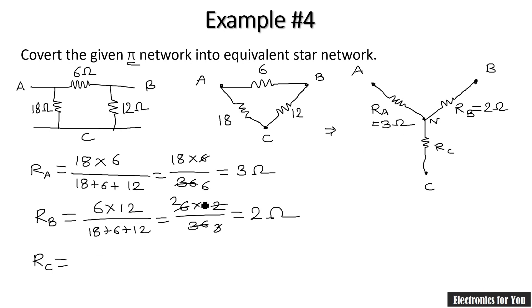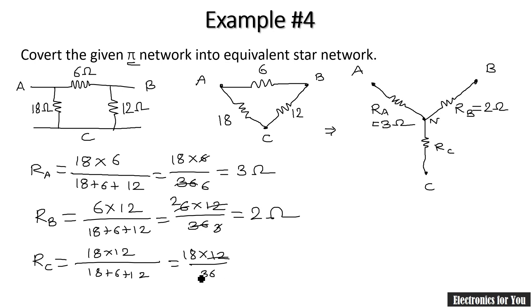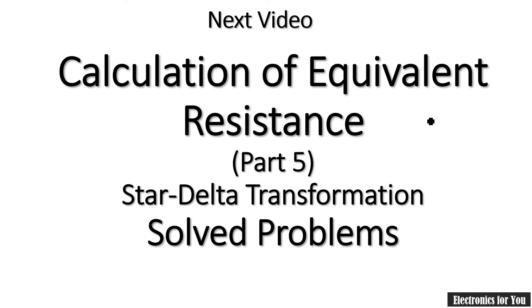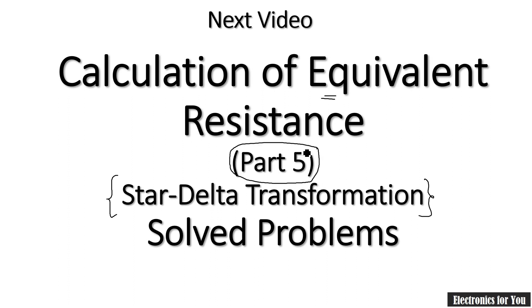Now let us calculate R_C, the third resistor. At point C, 12 ohm and 18 ohm are directly connected. So R_C equals 18 multiplied by 12 divided by 18 plus 6 plus 12, which is 18 times 12 over 36, giving 6 ohm. R_C equals 6 ohm. In this way a pi network or delta network is converted into equivalent star network. In our next video I will explain calculation of equivalent resistance with problems focused on larger circuits using star delta transformation. We are continuing as part number 5 in our next video. Thank you.